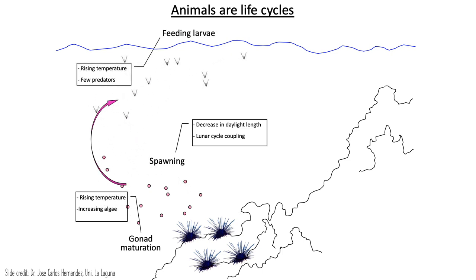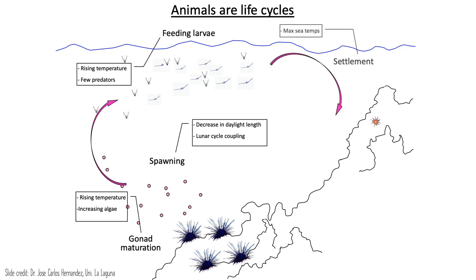The larval stage is in some cases a feeding larval stage. You can think of these larvae as little feeding machines that have to gather as much food from the water column as possible — usually phytoplankton. The larvae will mature and may develop through a series of different larval stages. At some point, in response to a chemical cue or a developmental timing cue, the organisms will metamorphose and settle as juveniles into the benthos, where they begin feeding on a different food source.